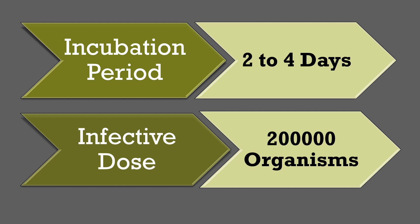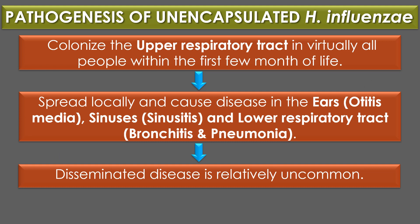The incubation period of Haemophilus influenzae is 2 to 4 days, and the infective dose required to cause an infection is 200,000 organisms. Regarding pathogenesis of unencapsulated Haemophilus influenzae: non-encapsulated strains colonize the upper respiratory tract in virtually all people within the first few months of life. They can spread locally and cause diseases in ears (otitis media), sinuses (sinusitis), and lower respiratory tract (bronchitis and pneumonia). Disseminated disease is relatively uncommon.